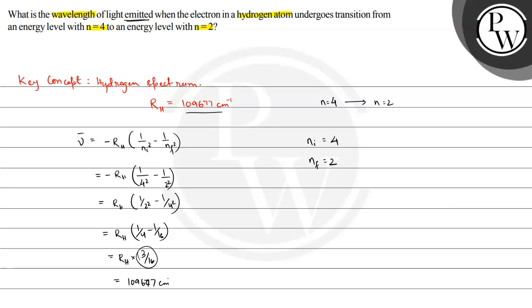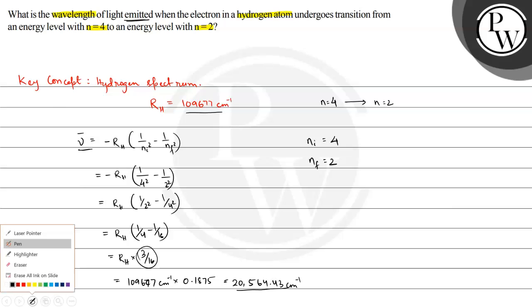With Rh value of 109,677 centimeter inverse, we get 109,677 centimeter inverse multiplied by 0.1875, which gives us 20,564 centimeter inverse. This is our wave number.